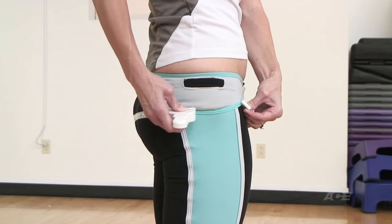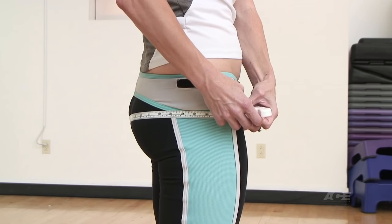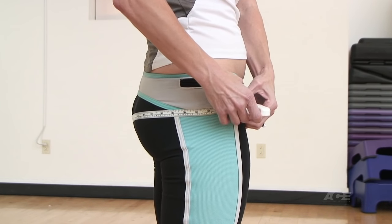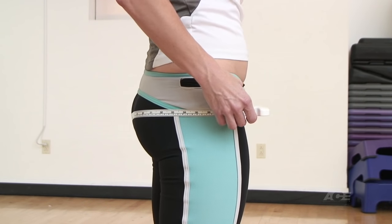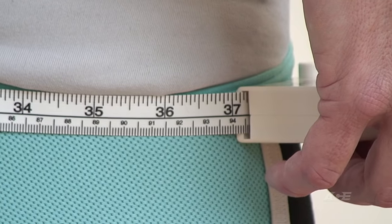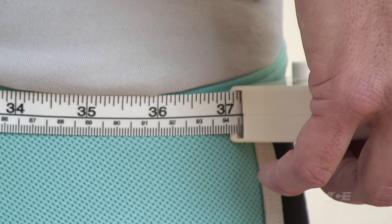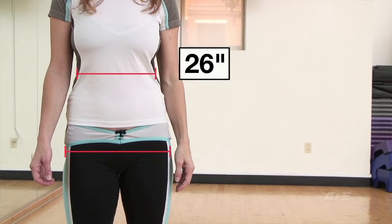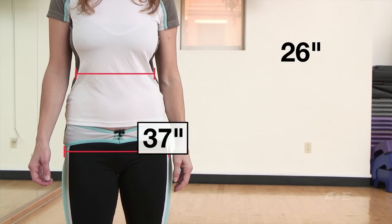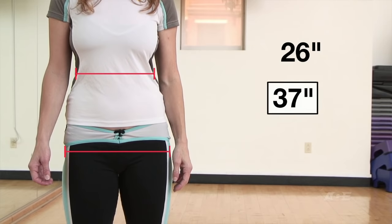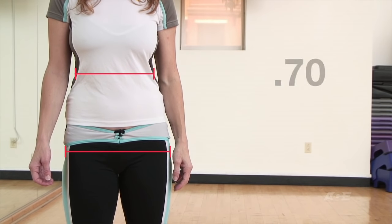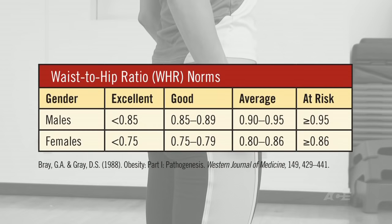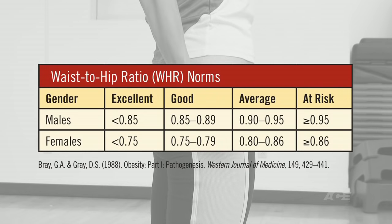Another measurement that can be used, and research has shown to be the superior clinical measurement for predicting cardiovascular disease mortality, is the waist-to-hip ratio. For this assessment, the hip measurement should be taken at the greatest circumference of the buttocks. You will then find the waist-to-hip ratio by taking the waist measurement you completed earlier and dividing it by the hip measurement. This table shows the waist-to-hip ratio norms.